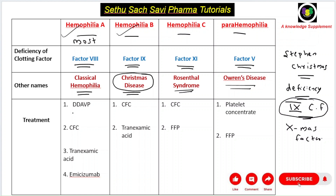For treatment of Hemophilia A, desmopressin (abbreviated DDAVP) can be given for mild Hemophilia A. For severe cases, clotting factor concentrate — specifically clotting factor 8 concentrate — must be given, since factor 8 is deficient in Hemophilia A. Synthetically made clotting factor 8 can also be administered.